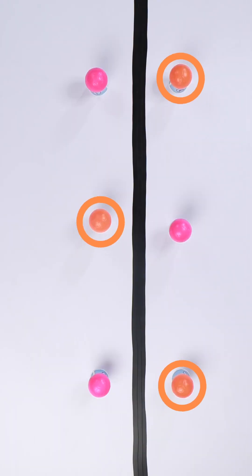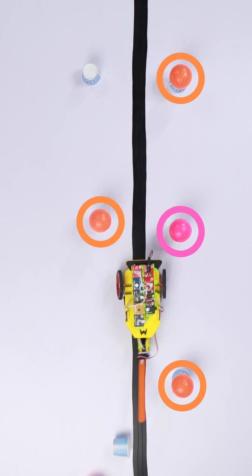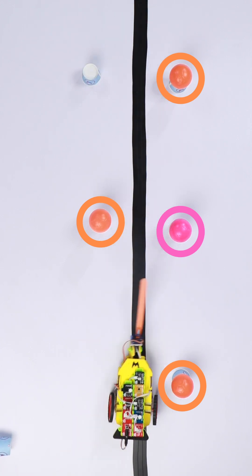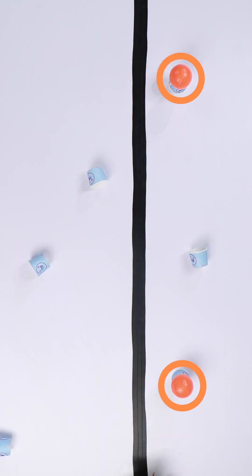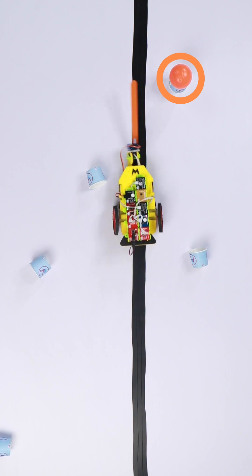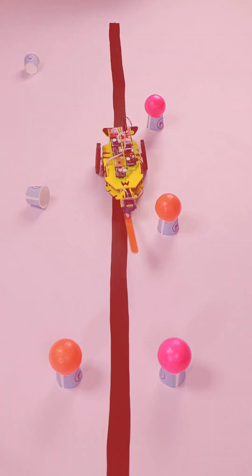The ball should be placed in this order. The objective is to kick the balls off the cup in a specific order. First, you'll kick off the pink balls, followed by the orange balls. It is crucial to kick one color at a time, and there's a penalty of 10 seconds if you kick the wrong ball.